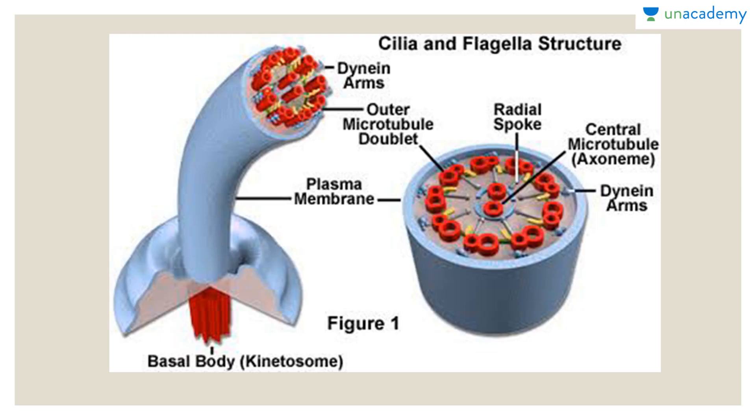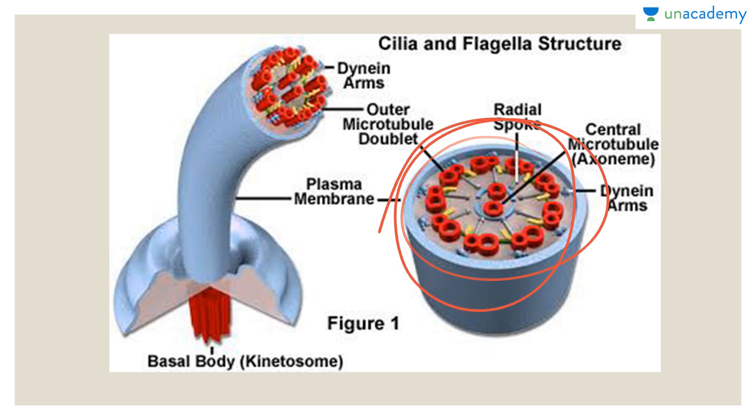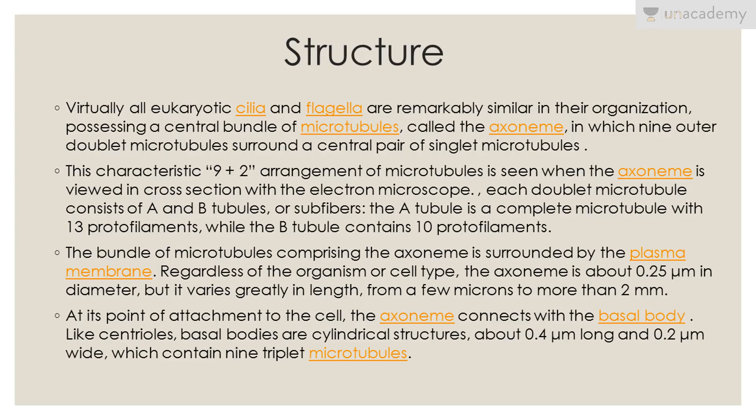The central structure is the axoneme, and the outer doublets are connected by radial spokes. Recall that in the centriole there was a nine-plus-three arrangement with all microtubules present in triplets and only one microtubule going through the center. The bundle of microtubules comprising the axoneme is surrounded by the plasma membrane. The axoneme is about 0.25 micrometers in diameter but varies greatly in length, from a few microns to more than 2 millimeters.